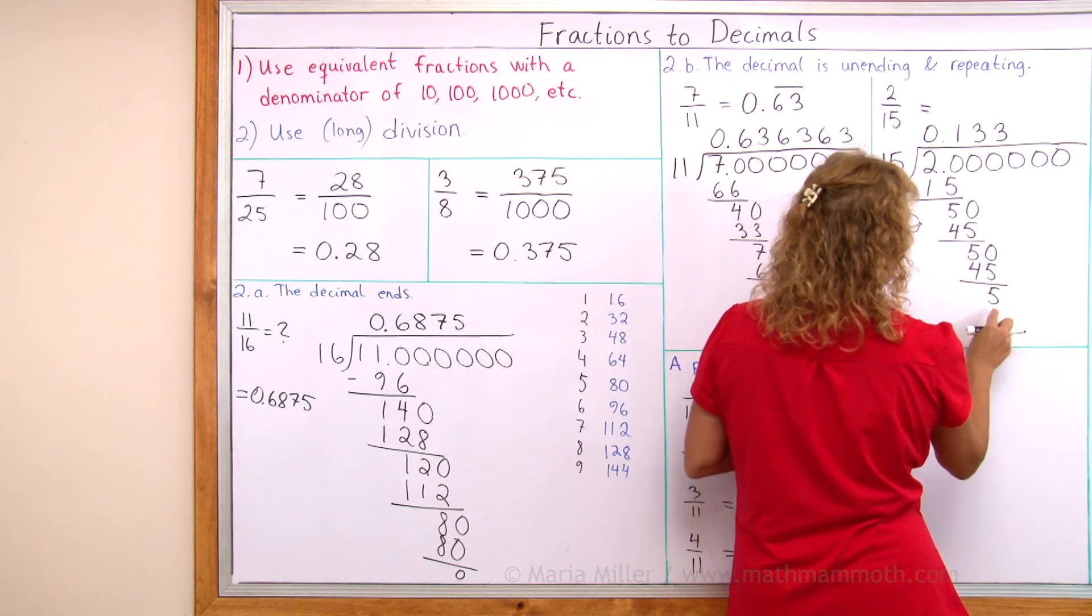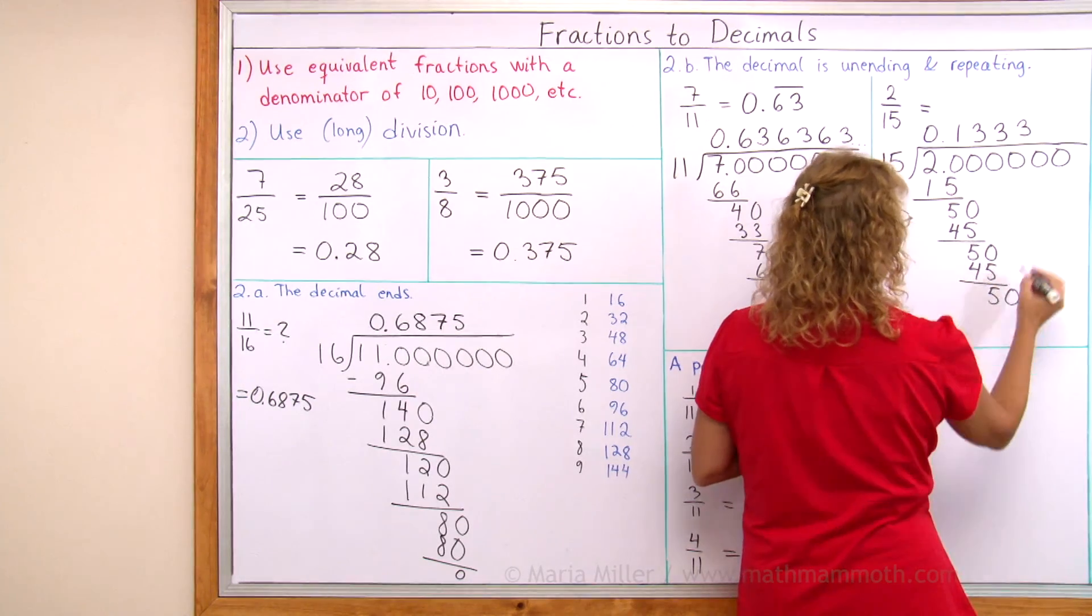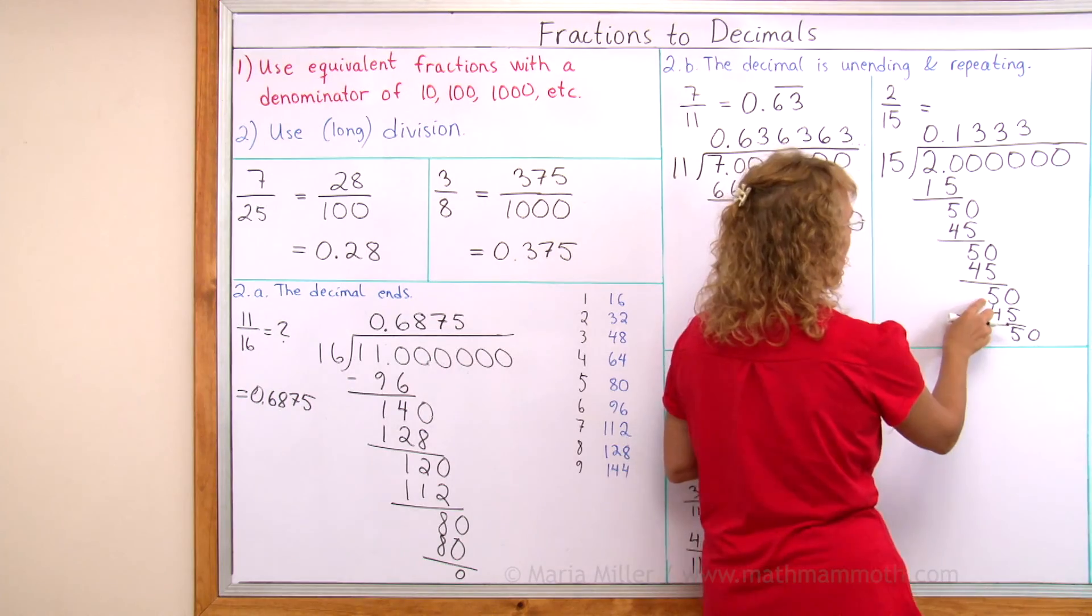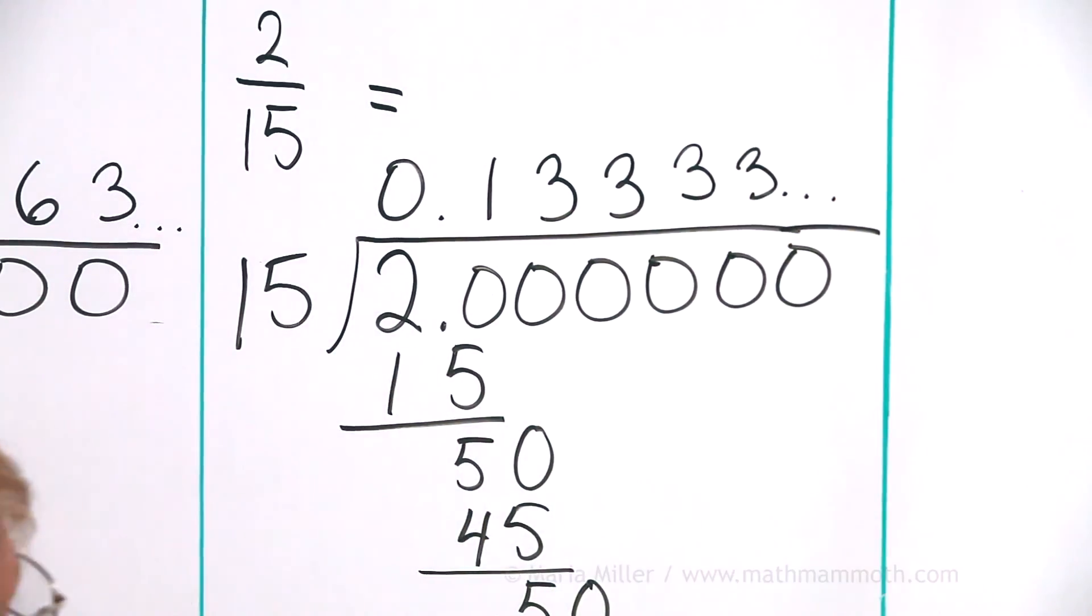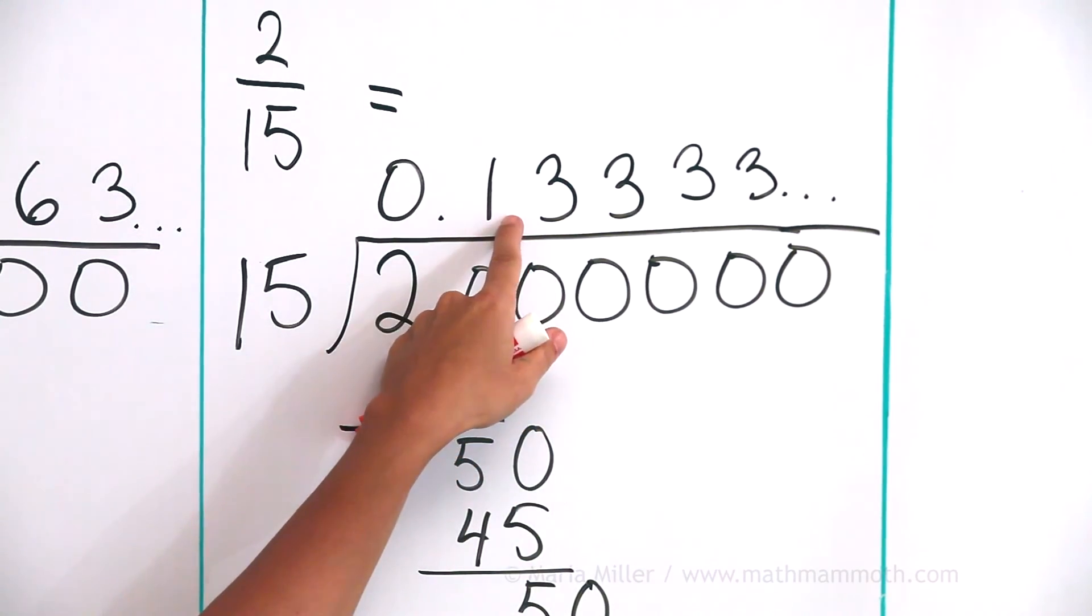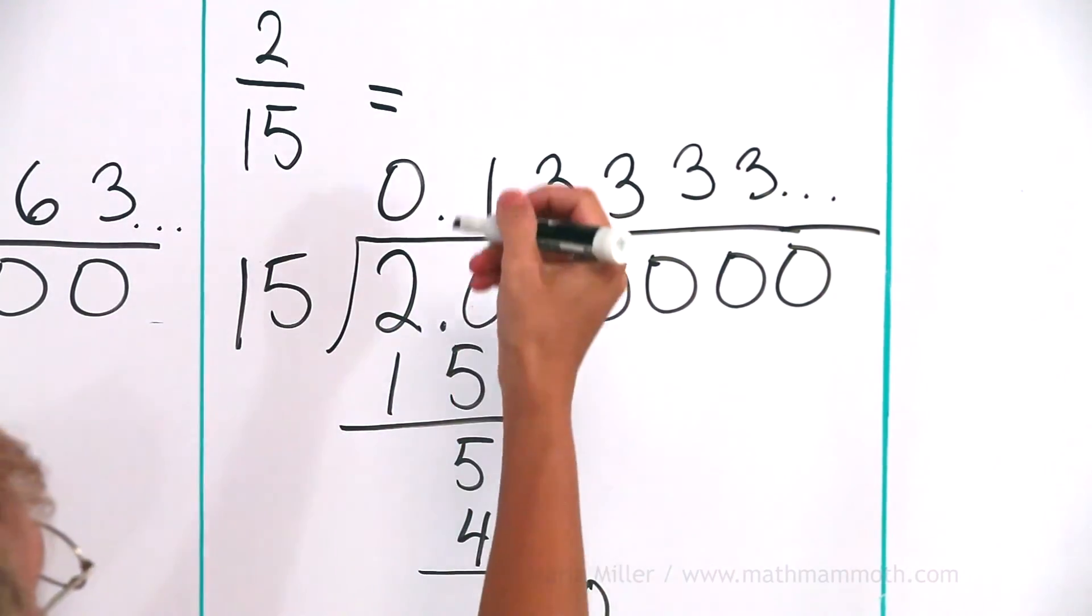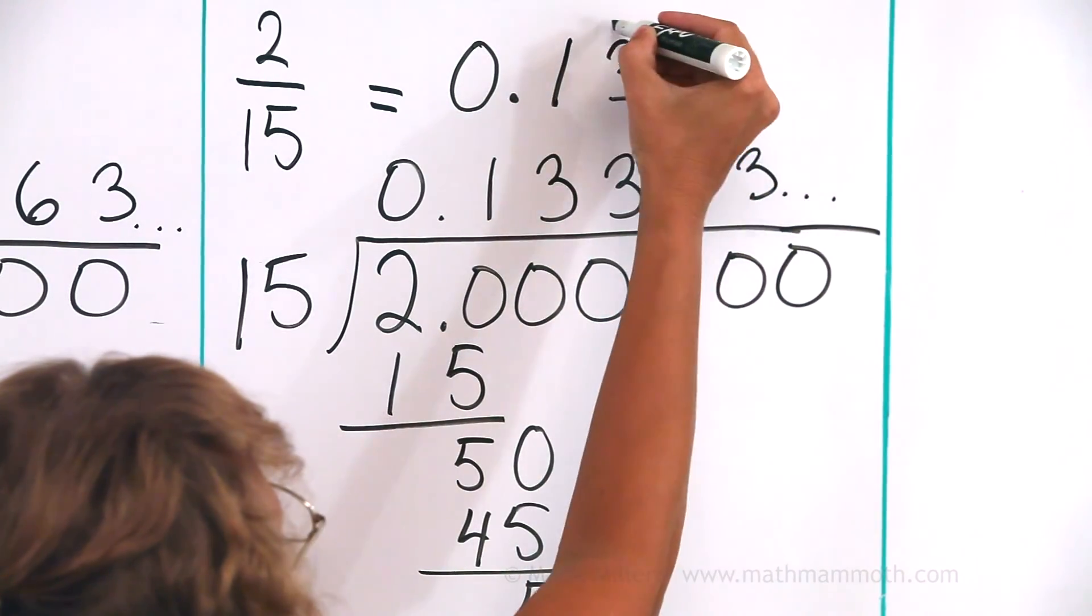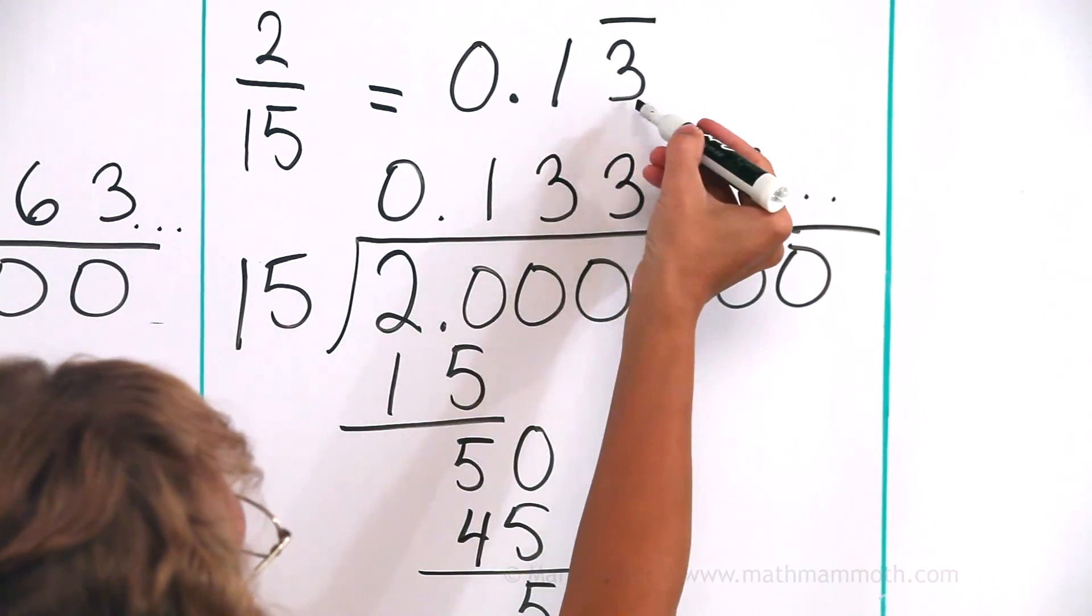Drop a zero. 15 goes into 50 three times. I see now, I'm not going to get anywhere. I'm just going to get this 5 always, and then 50, and then 50, and 3 here. It is repeating. I always get 5 as my remainder, and these 3s here keep repeating. But notice, there was this digit here, 1, that is not repeated. It's only repeating the 3s. So when I write it here, I can write it this way: 0.13, and I write this bar above 3, because 3 repeats but 1 does not.